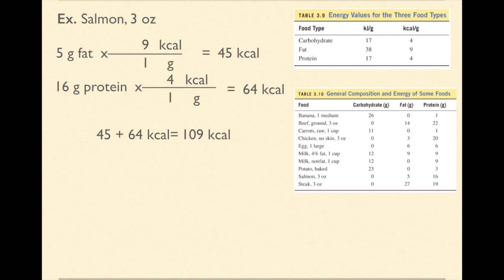Keep in mind that kilocalories is the same thing as capital C calories, which is the calories we're used to talking about. So there are 109 calories, capital C, in a three ounce sample of salmon.